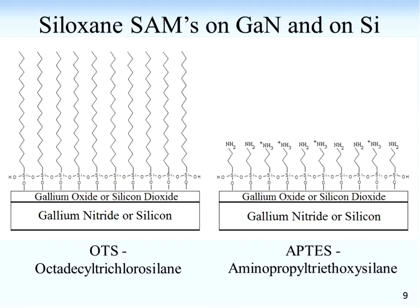I want to start by talking about two silanes in particular that I use. There's octadecyl trichlorosilane, or OTS — that's a long 18-carbon chain molecule terminated in the silane group, and it is very hydrophobic. OTS monolayers are useful for things like reducing adhesion and repelling bacteria. On the right side, we have an APTES monolayer — that's aminopropyl triethoxysilane. APTES is actually a short carbon chain, but on the tail end it's terminated in an amine group, which is very useful because we can do additional chemistries on it, widening the usage of the monolayer.